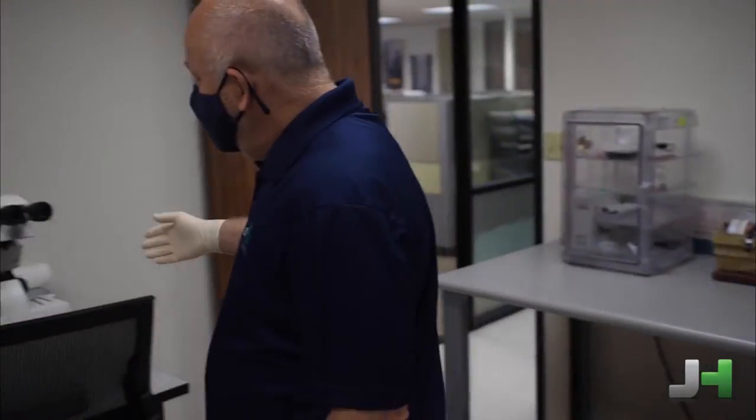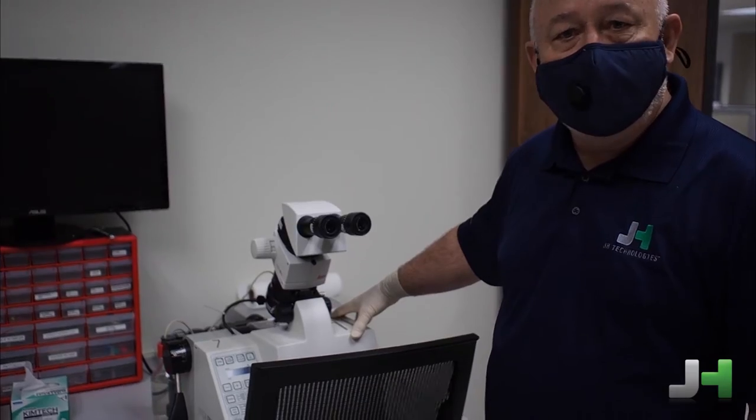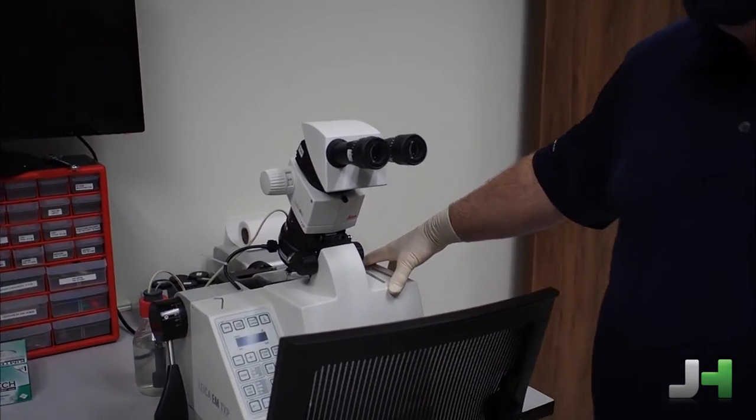So inside of this lab, we have a coder, an A600 coder. And then over here, we have a TXP. The TXP is a grinding and polishing tool, micro grinding, micro polishing. So it takes off larger amounts of material.